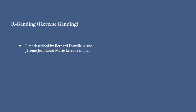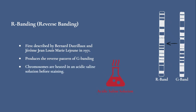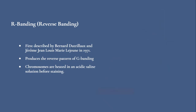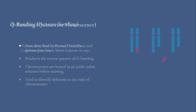R-banding was first described by Bernard Dutrilot and Jérôme Lejeune in 1971. R-banding produces the reverse pattern of G-banding. Chromosomes are heated in an acidic saline solution before staining, causing GC-rich regions to appear dark and AT-rich regions to appear light. This technique is particularly useful for identifying deletions at the ends of chromosomes.